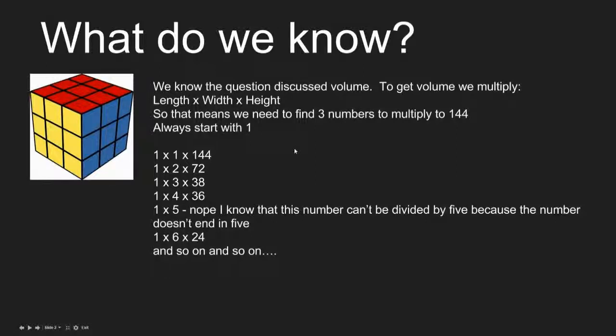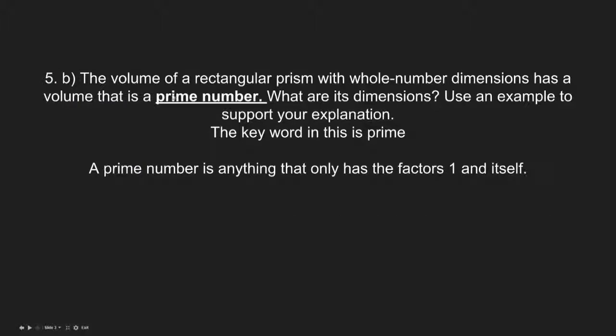Question b says the volume of a rectangular prism with whole number dimensions has a volume that is a prime number. What are its dimensions? Use an example to support your explanation. The key word in this is prime.